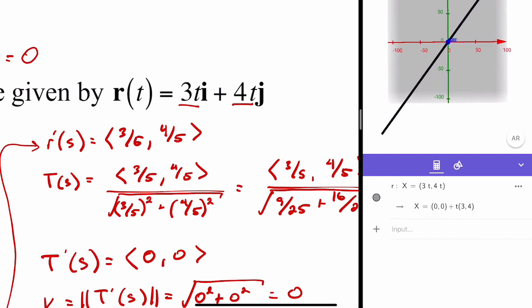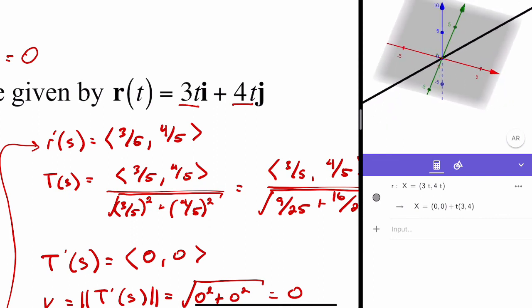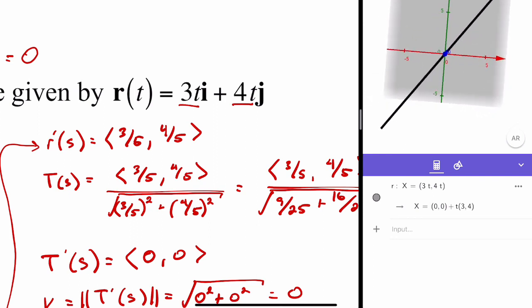We can see that this vector value function is a straight line, and it is always a straight line. So any point that would calculate the curvature for this would be 0. If you have K equals 0, that means there is no curve whatsoever.